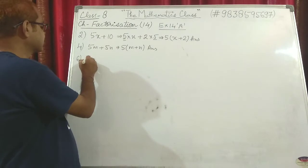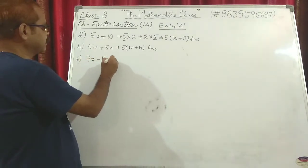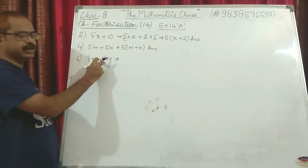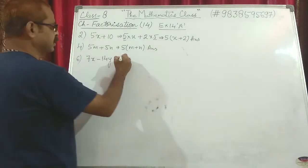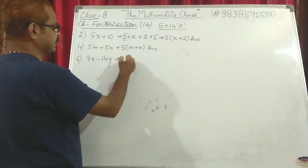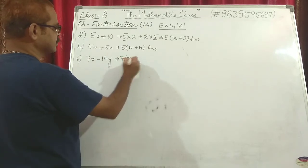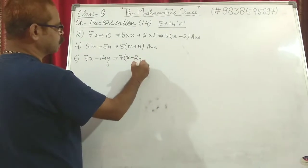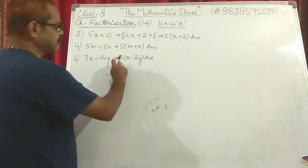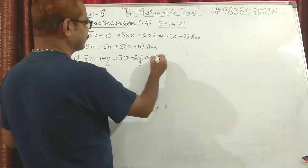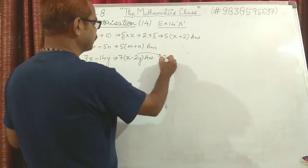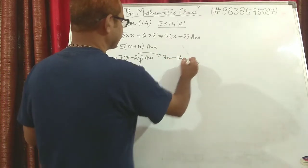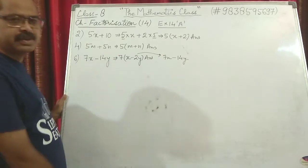Question 6: 7x − 14y. From 7x and 14y, what is common? Since 14 is 2 times 7, only 7 is common. We take 7 common. What is left in the first term? x. Then minus — 7 has been taken out so 2 is left — so 2y. The answer is 7(x − 2y). To cross-check, multiply: 7 into x is 7x, and 7 into 2y is 14y. The question is the same, so we are correct.